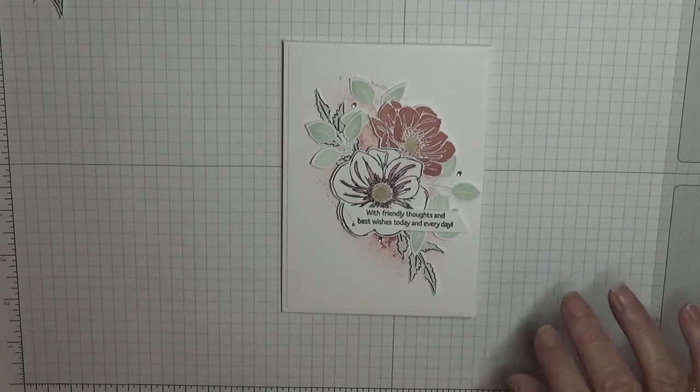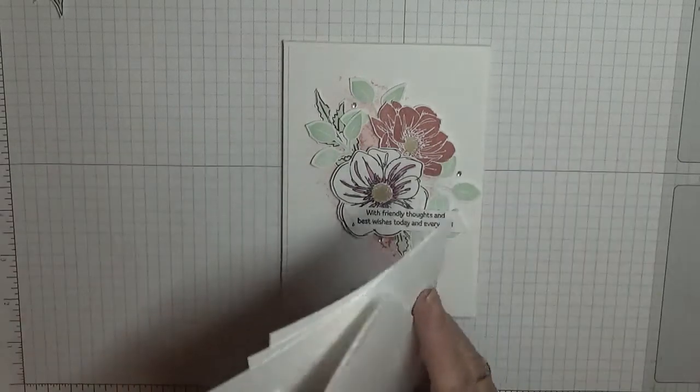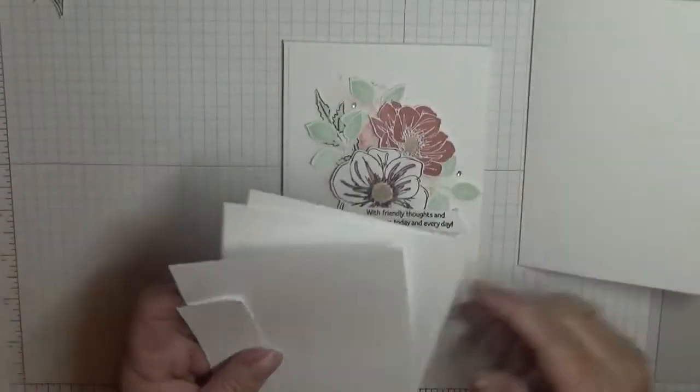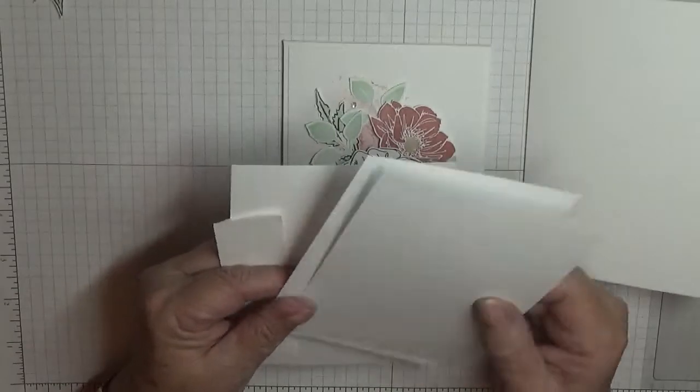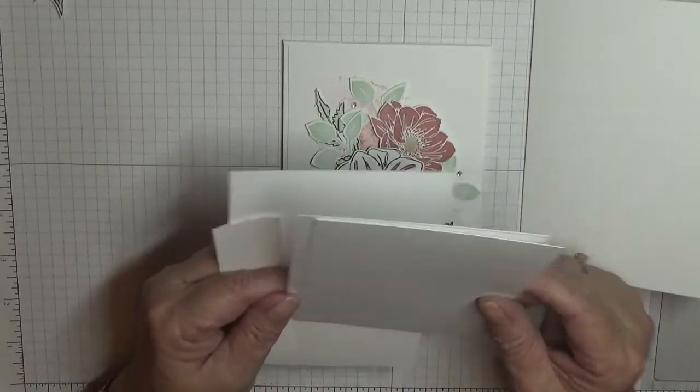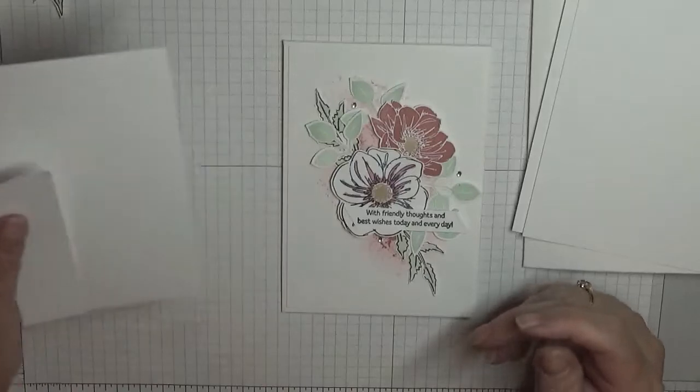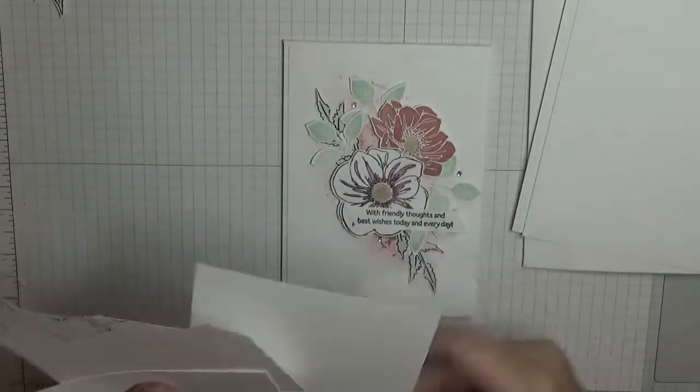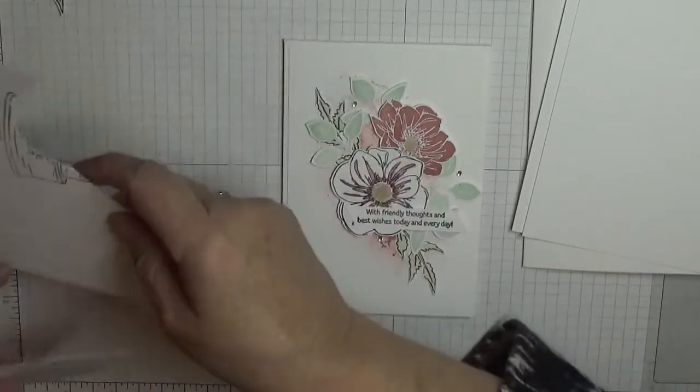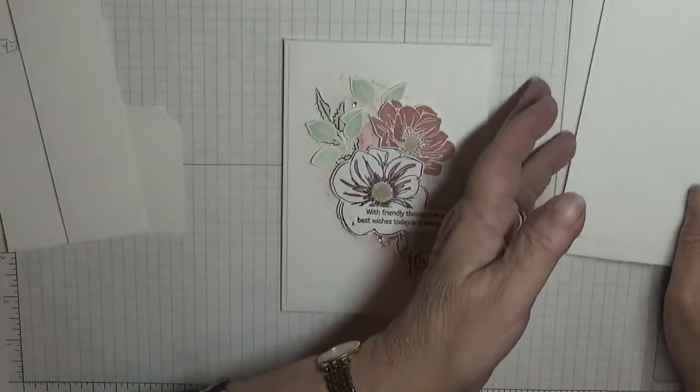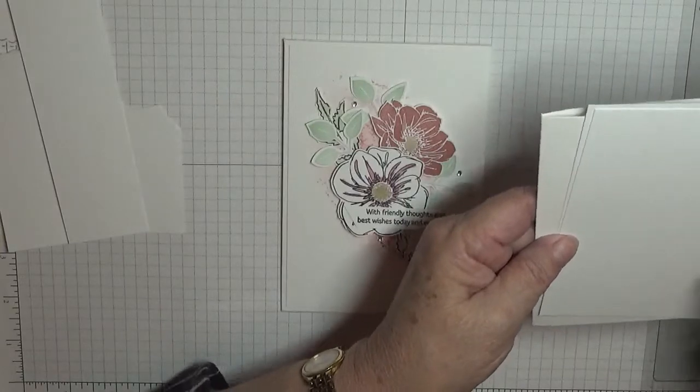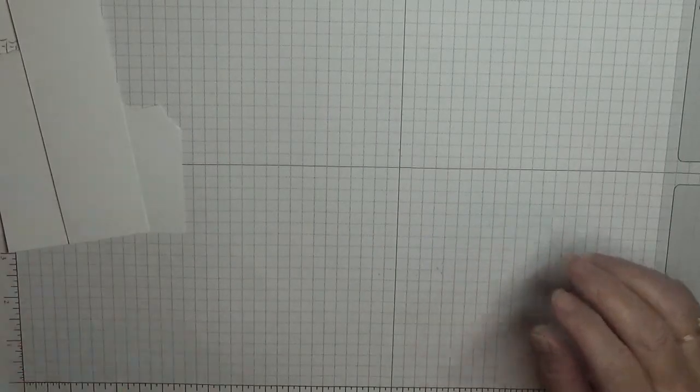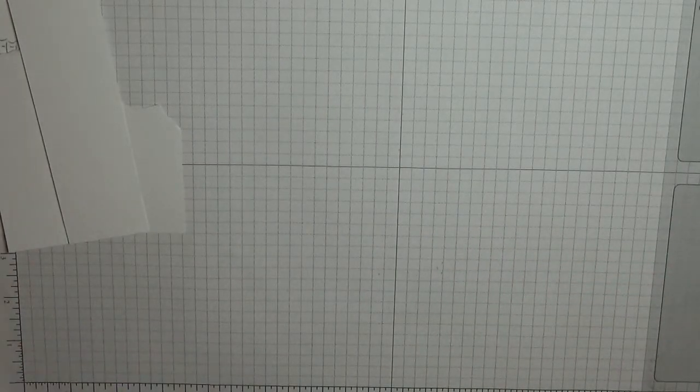The card I used is just a white card base, eight and a quarter by three, five and seven eighths, scored at four and one eighth, folded in half. Two pieces of white cardstock, one for the front and one for the inside, and some scraps for the flowers and the leaves. So to get started we will stamp all the flowers ready for fussy cutting.